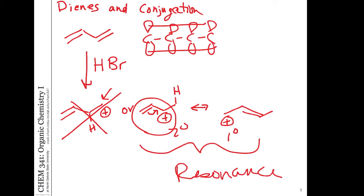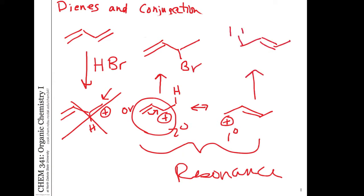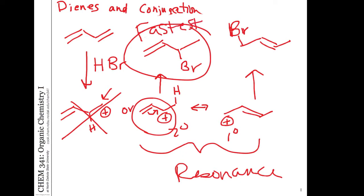So what it says is there's plus charge on two carbons. There's more plus charge on this secondary carbon than there is on the primary carbon. But in fact, the bromide could react on either. So if you react the bromide on this particular resonance form, you would get this product. And if you react on here, you would get that product. Which one is formed fastest? The more substituted one. That's right — this more substituted one is formed the fastest. Which one is most stable? Not the one that forms the fastest. This is the more stable product.